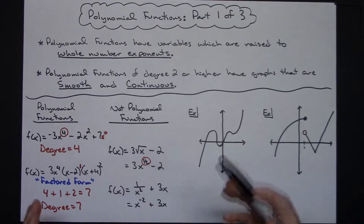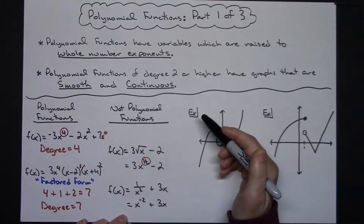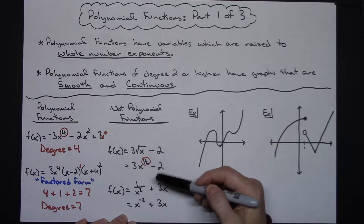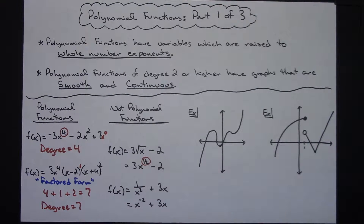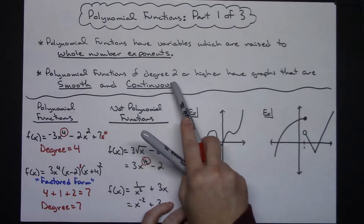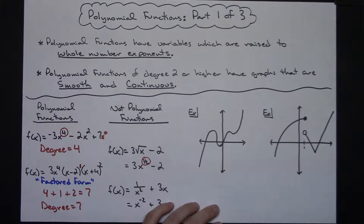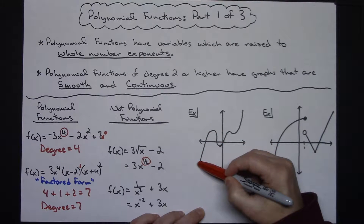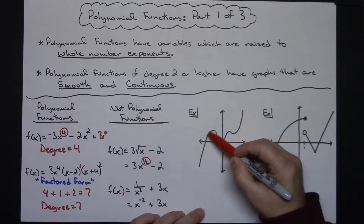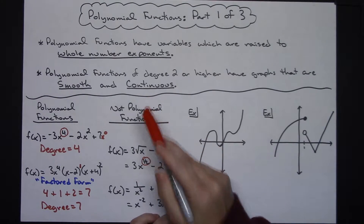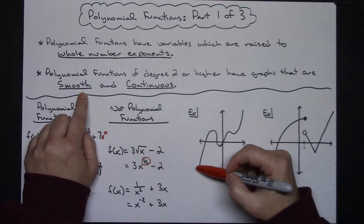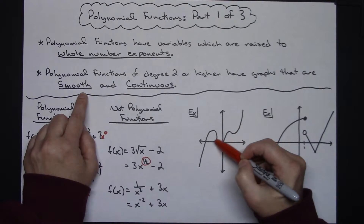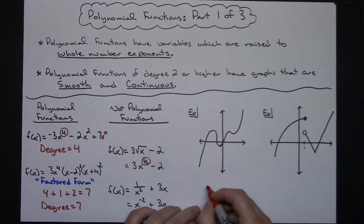At the very beginning of any chapter that deals with polynomial functions, you'll be asked to identify which equations are polynomial functions. Now let's look at graphs. A degree 2 or higher polynomial function will be smooth and continuous. Continuous basically means I can draw the entire curve without lifting my pencil. Looking at this graph, I can draw the entire thing without lifting my pencil so it's continuous, and every curve is smooth, so this is definitely a polynomial function.